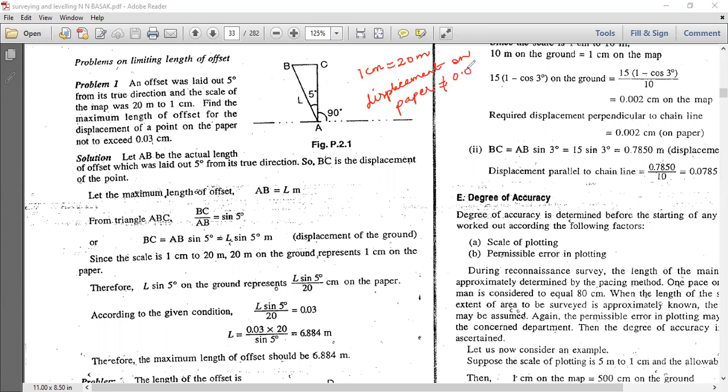Let me solve. What is displacement? Displacement is BC. Maximum allowable is given as 0.03. So let us consider this triangle ABC. Here we have to find the maximum length L.